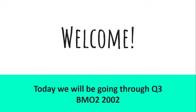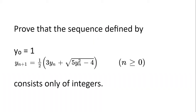Welcome. Today we'll be going through question 3 from the British Maths Olympiad, round 2, 2002. Prove that the sequence defined by y₀ equal to 1 and yₙ₊₁ equal to half of 3yₙ plus the square root of 5yₙ squared minus 4, where n is greater or equal to 0, consists only of integers.